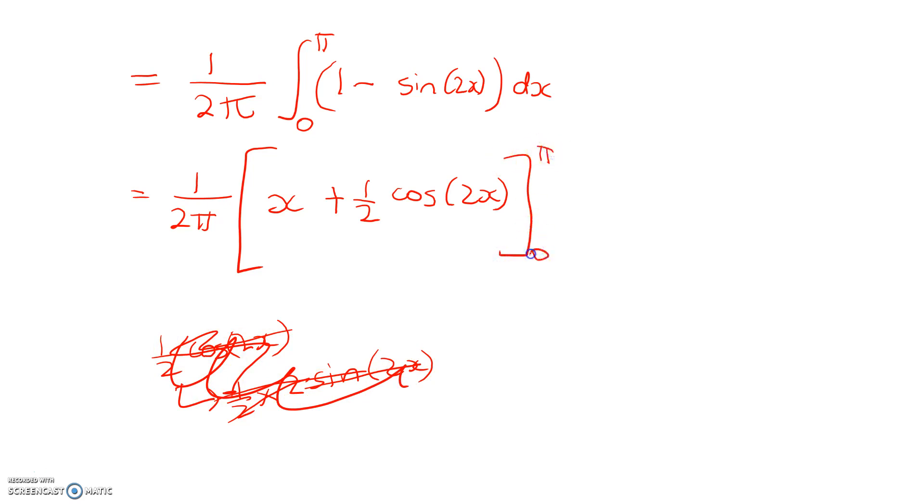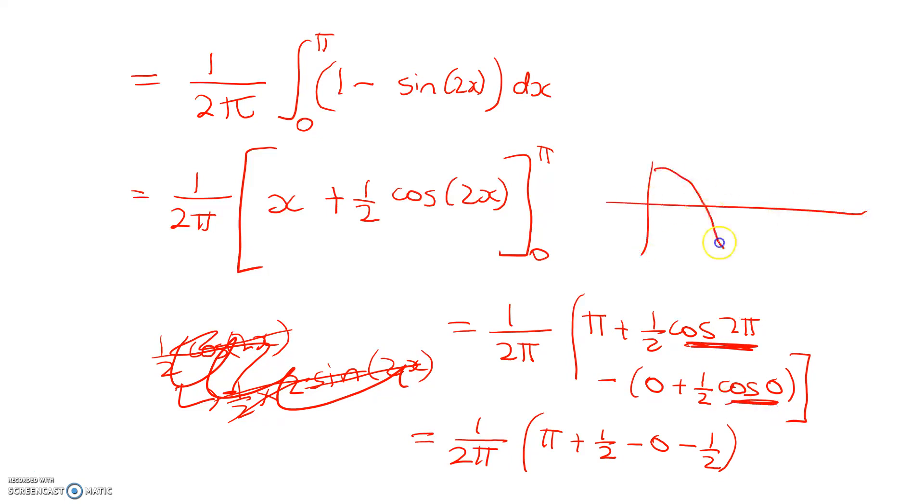1 over 2 pi times pi plus 1 half cos 2 pi minus 0 plus 1 half cos of 0. Be really careful with cos of 0, it's an easy place to fall over. So 1 over 2 pi times pi plus 1 half minus 0 minus 1 half. Now just how am I doing this so quickly? Well you might have forgotten. Here's what the cosine graph looks like. So cos of 0 is 1, the period is 2 pi, so cos of 2 pi is also 1. So that gives me a final answer of pi on 2 pi, which is just equal to 1 half.